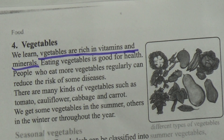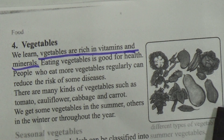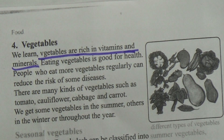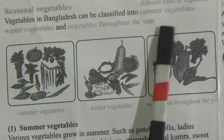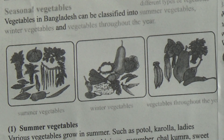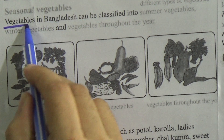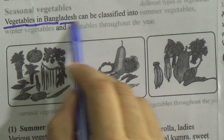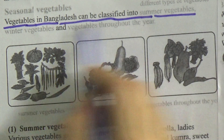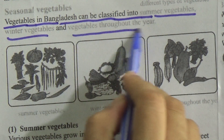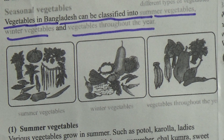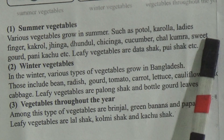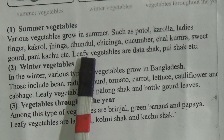Now, seasonal vegetables. Vegetables in Bangladesh can be classified into two groups: summer vegetables and winter vegetables. Various vegetables grow in summer such as potol, korolla, lady's finger, kakrol, jinga, dhundhul, chichinga, cucumber, chalcumbra, sweet gourd, pani kachu, etc. Leafy vegetables include data shag and pui shag.